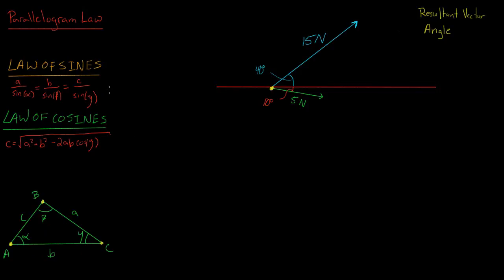Looking at the law of sines, it's a ratio of the length of side a over the sine of alpha, equal to the ratio of side b over the sine of beta, and also c over the sine of gamma. The law of cosines uses the same notation: the length of side c is equal to the square root of a squared plus b squared minus 2 times a times b times the cosine of gamma.